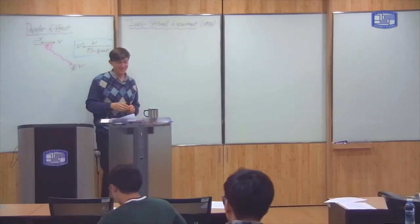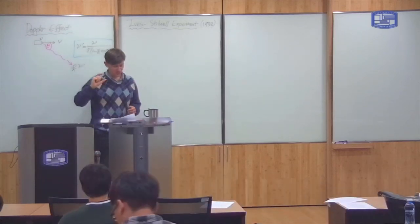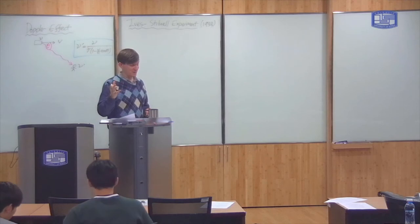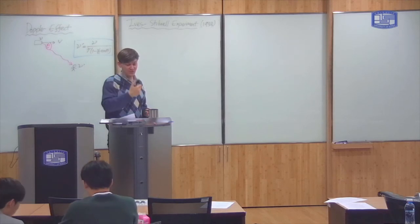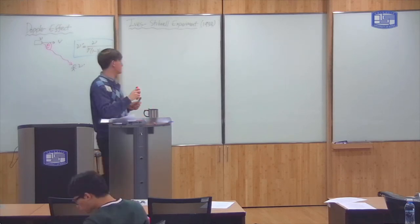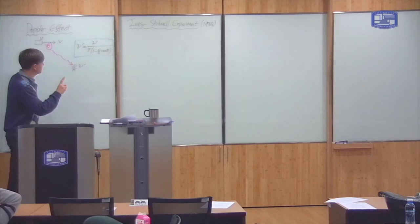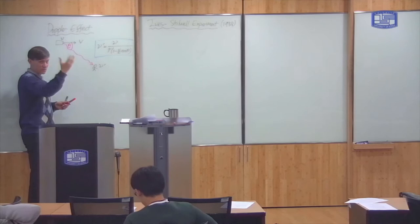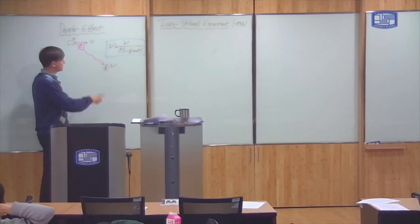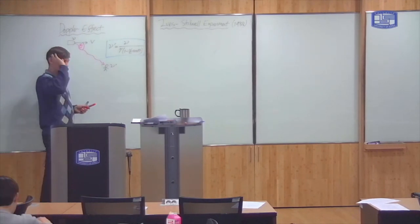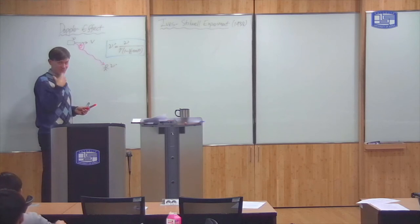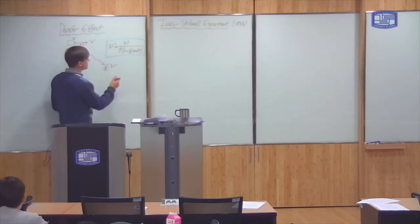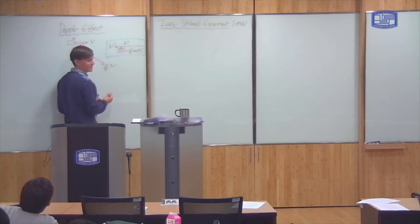Okay, I think we should start again. So I'm just going to say one more thing about the Doppler effect before we move on to the next topic. So if you try and work out this same effect in a Newtonian universe, that means you consider the same thing, but you use the Galilean transformation rather than the Lorentz transformation, then the only difference is that this factor gamma disappears.